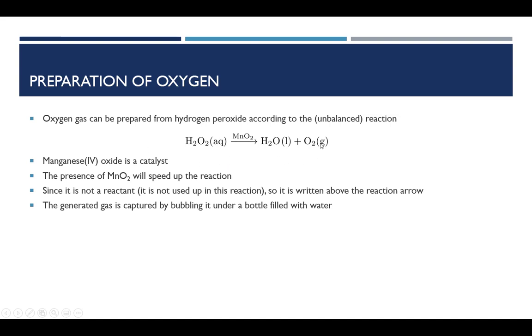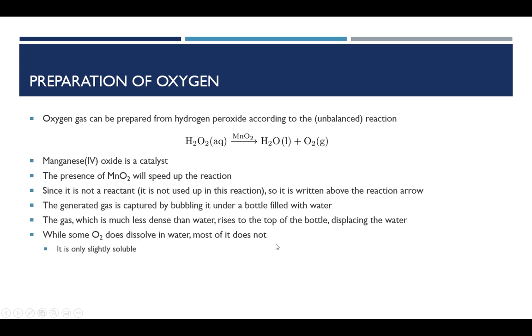The oxygen that's produced has to be collected in some way. We can't simply just wave the flask right over the decomposing hydrogen peroxide, because that's going to push a lot of air into the flask as well. So we use a technique called collecting a gas over water. The gas is bubbled through a tube of water, and the gas will then bubble to the top of the bottle because the gas is much less dense than the water and the gas is not very soluble in water. Some oxygen does dissolve, but most of it doesn't. It is said to be only slightly soluble. O₂ is a nonpolar molecule, and we know that water is polar. So we wouldn't expect oxygen to be very soluble.